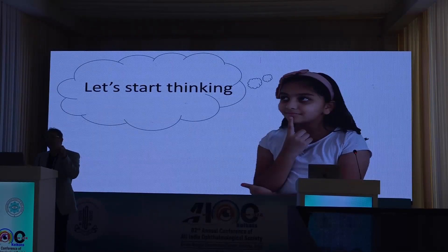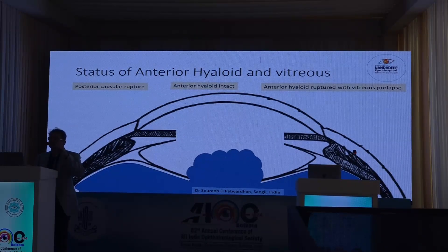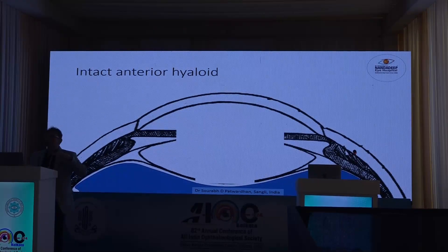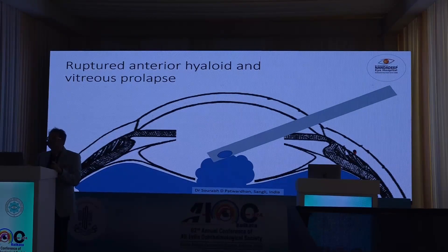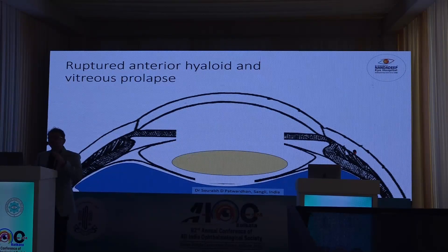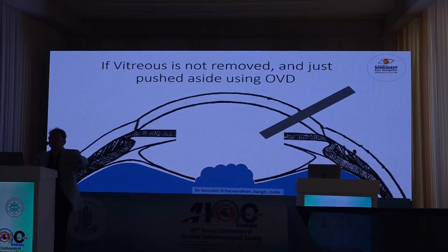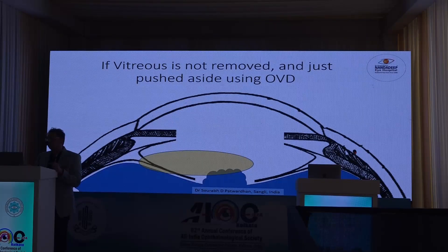When can we put the IOL in the bag despite PCR? First, assess the status of the anterior hyaloid and vitreous. If the PC is ruptured but the anterior hyaloid is intact, you may place the IOL in the bag without much intervention. However, whenever there is vitreous in the anterior chamber, always perform anterior vitrectomy. Don't use heavy OVD to push vitreous aside — the IOL will decenter and vitreous will prolapse later.